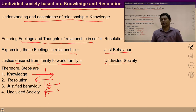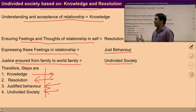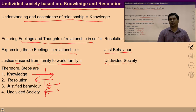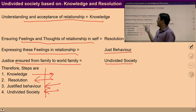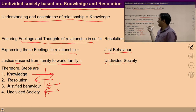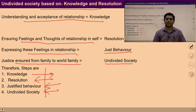To ensure undivided society, justice is required, and for justice, these steps are required: one should have knowledge of relationship and clarity of co-existence, then resolution at the level of self, then ability to express these feelings in relationships. One can then become a natural agent of ensuring justice from family to world family order, and it will ensure the state of undivided society.